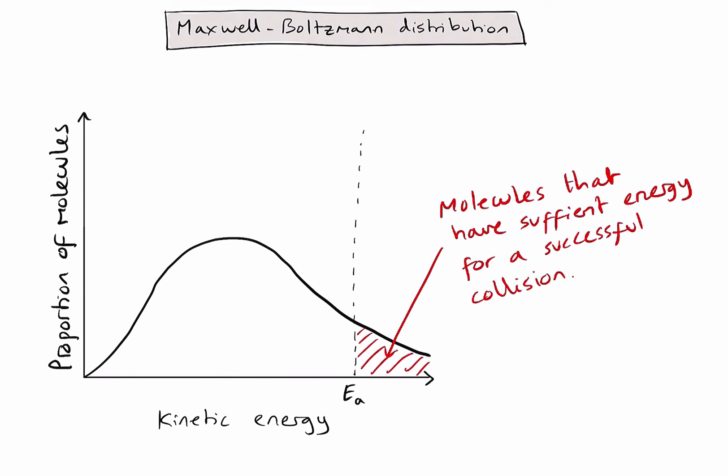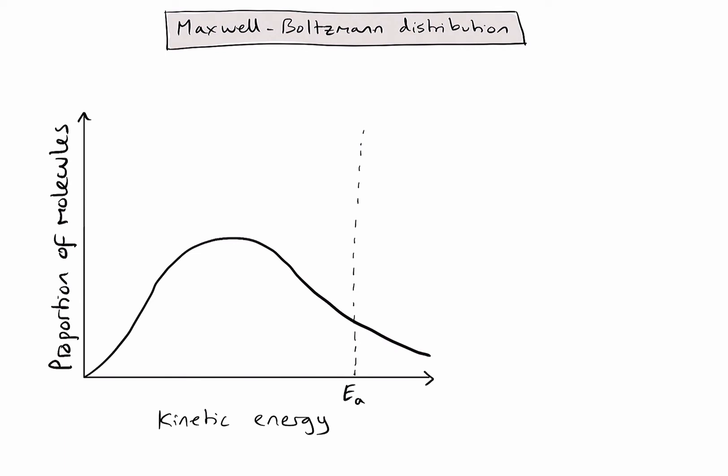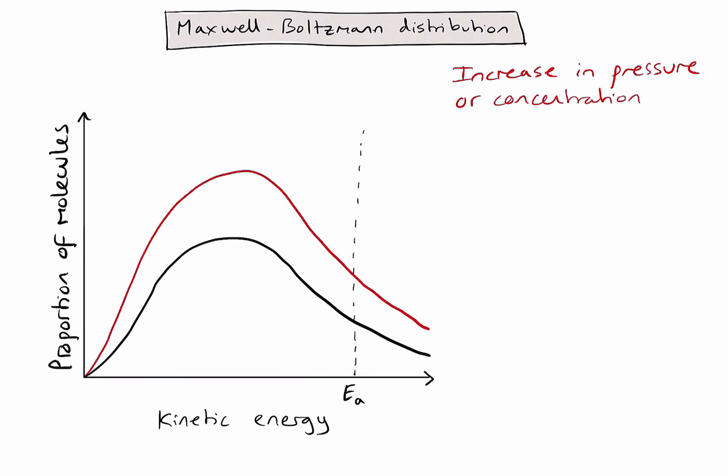Let's consider what happens to the shaded area of the graph in different conditions. First, consider an increase in pressure or alternatively an increase in concentration. If I increase the pressure or concentration, what I'm actually doing is increasing the number of molecules in a unit volume. The graph is the same shape, just higher up because there are now a greater number of molecules per unit volume. Looking at the shaded area to the right of the dotted line, it has increased significantly, meaning more molecules now have the required activation energy, so I would expect to see an increased rate of reaction.